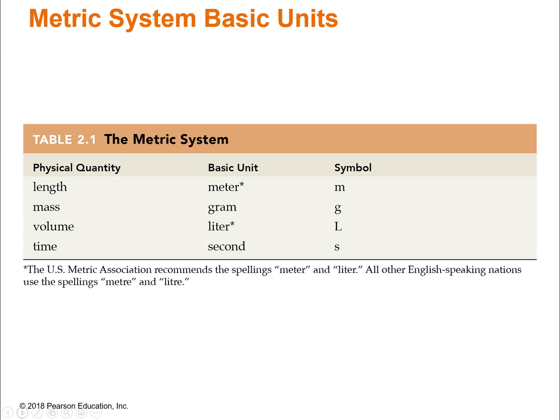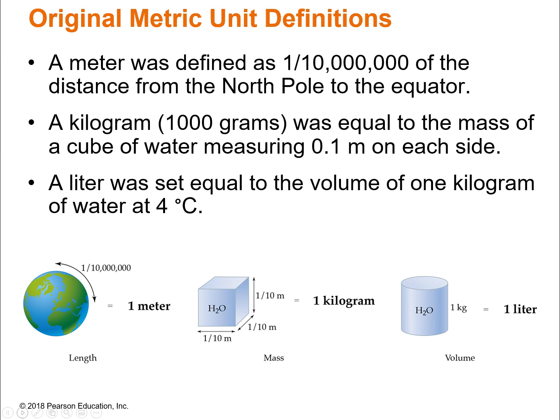It's really simple. There's a single base unit for each measurement — like length, mass, volume, those kinds of things. This table shows you the physical quantity: length, mass, volume, and time, and the basic unit — the meter, gram, liter, and second — and their symbols. Originally, the meter was defined as a physical distance, a very small part of the distance from the North Pole to the equator. A kilogram was equal to the mass of a cube of water measuring 0.1 meters on each side, and a liter was the volume of one kilogram of water at four degrees Celsius.